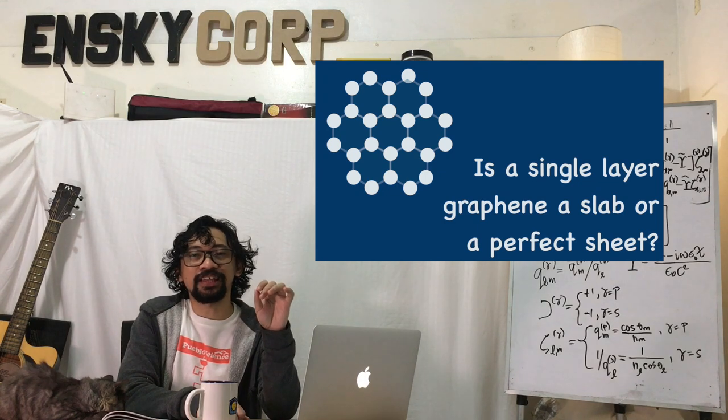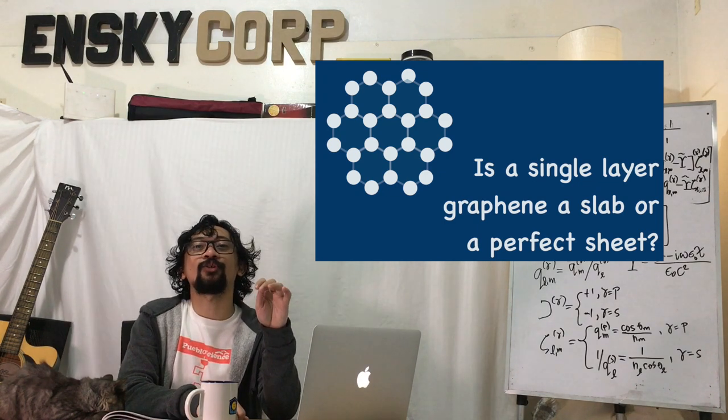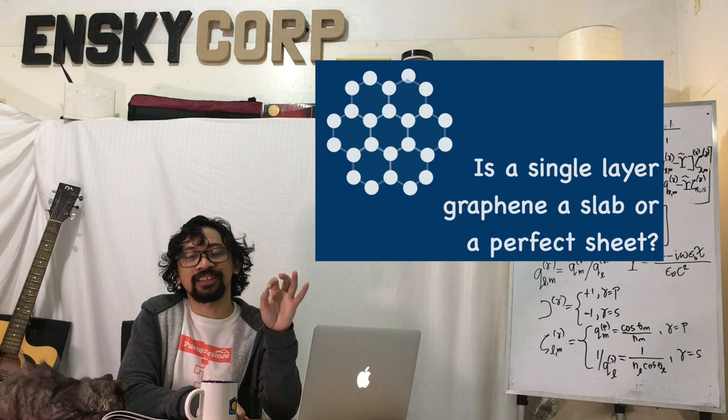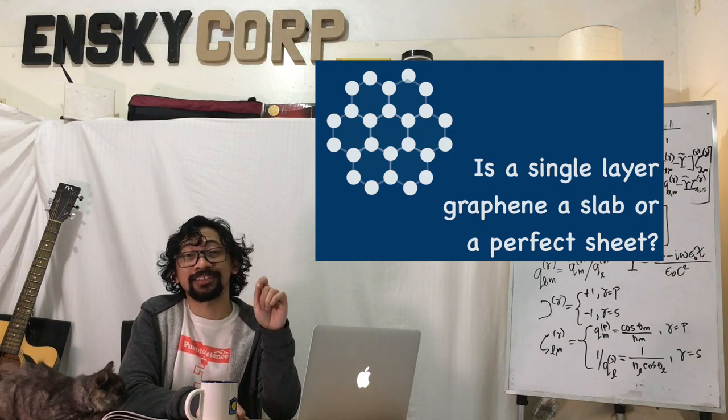So our team in the National Institute of Physics asks: is a single layer of graphene a slab with finite thickness or an infinitesimally thin sheet, which we call the perfect sheet?